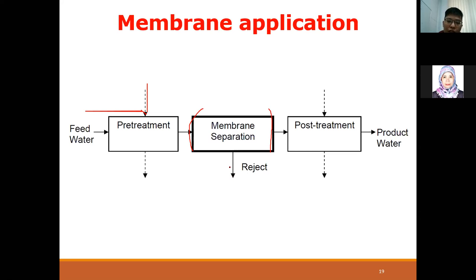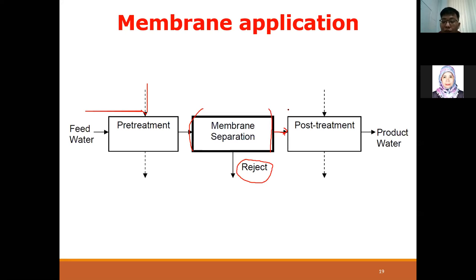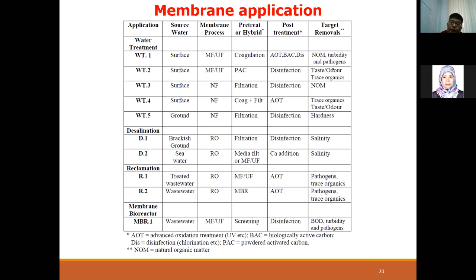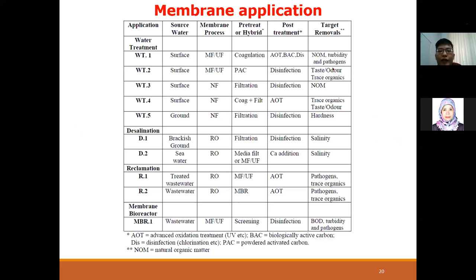If your feed water contains large particles like sand or colloidal particles and goes directly to the membrane without pre-treatment, it can cause a lot of harm and increase the fouling rate of the membrane. After membrane separation, the reject or retentate is separated out. The water then goes to post-treatment - polishing - sometimes using advanced oxidation technology or disinfection, and then becomes the product water.